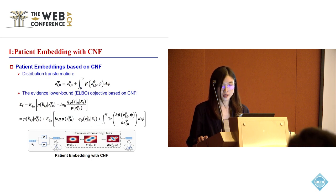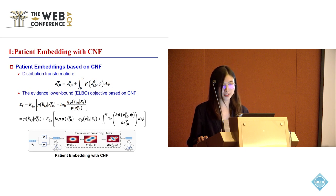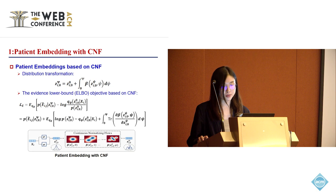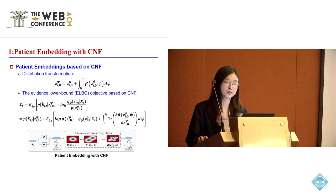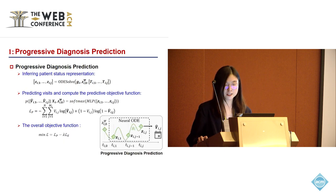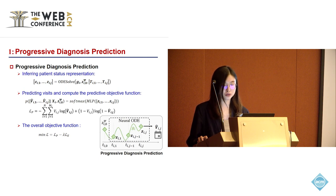With the initial state z_0, we then apply a differential function beta, which enables the transformation of the initial Gaussian distribution into a more complex patient-specific distribution. In this way, we can reduce the gap between approximate posterior and true posterior by employing such a rich prior distribution. Finally, we have the evidence lower bound objective based on CNF. With the learned sophisticated patient embeddings, we further define CNF-enhanced neural ODEs for progressive diagnostic prediction so as to model continuous patient status over time, and the patient status representation can be inferred by solving the neural ODEs.